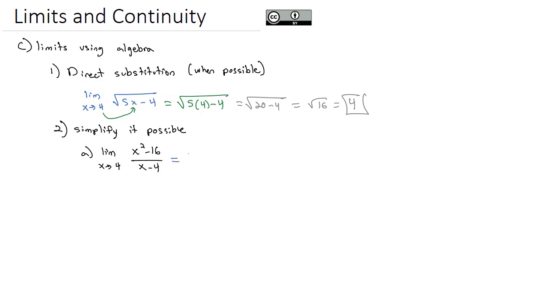But what I can do is factor that numerator to x plus 4 times x minus 4 over the denominator of x minus 4. Notice then the x minus 4s can reduce out, and we're just left with the limit as x approaches 4 of x plus 4.